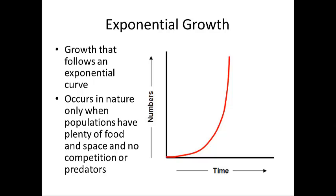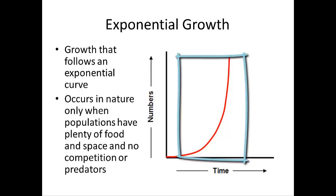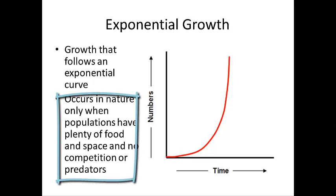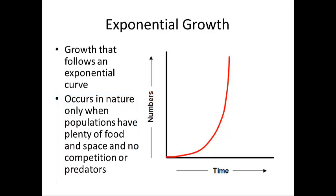When a population first comes to a new area, they can experience what is called exponential growth, marked by a J-curve, where the population increases rapidly over time. This only occurs when populations have plenty of food, lots of space, no limiting resources, and very few predators — growing almost out of control. This can happen when bacteria colonize a new surface, or when an invasive species arrives with no natural predators and out-competes native species, growing exponentially especially at the beginning.